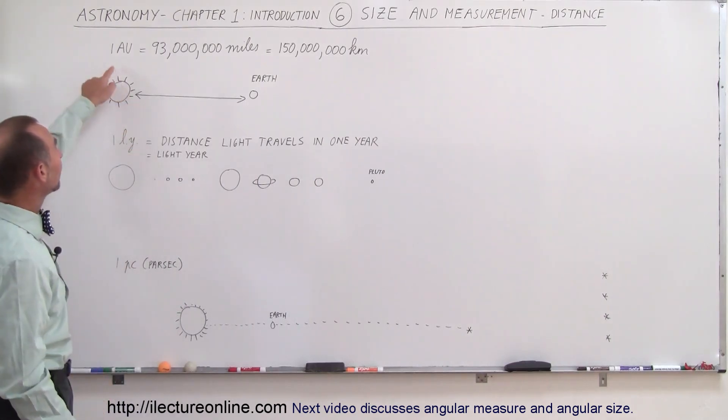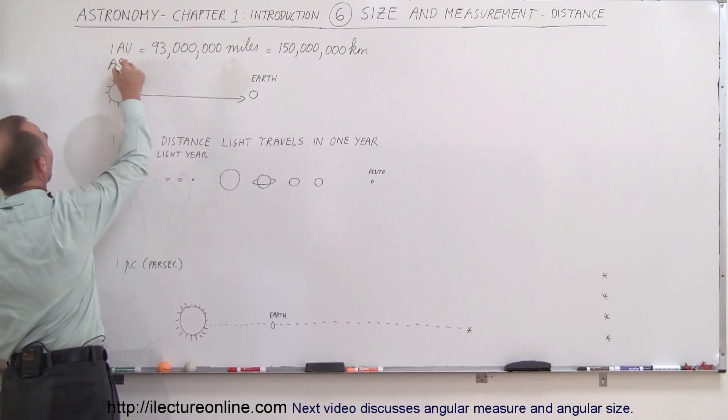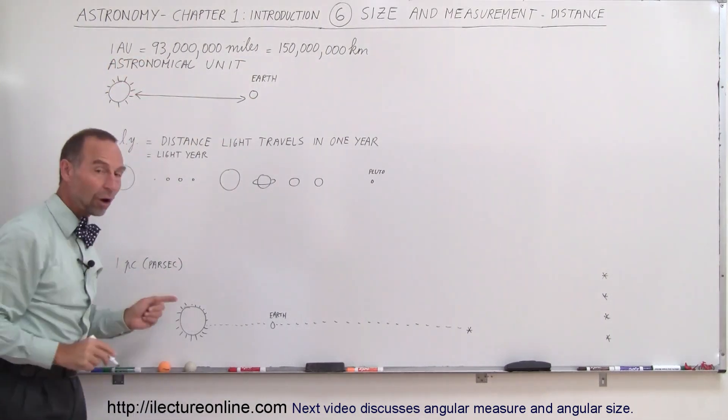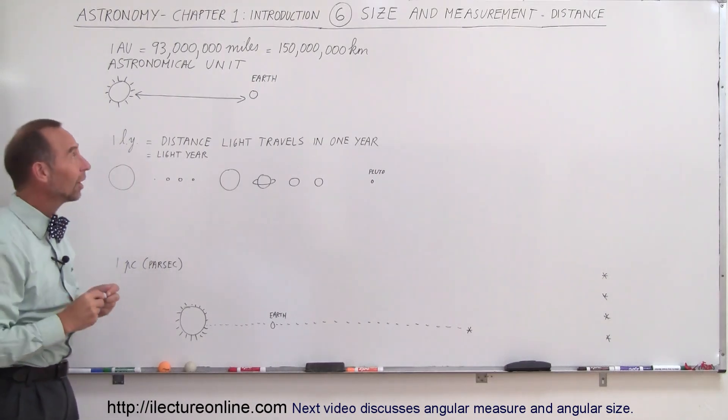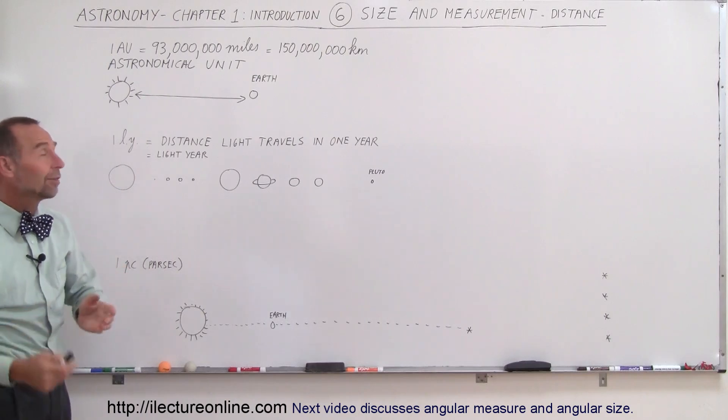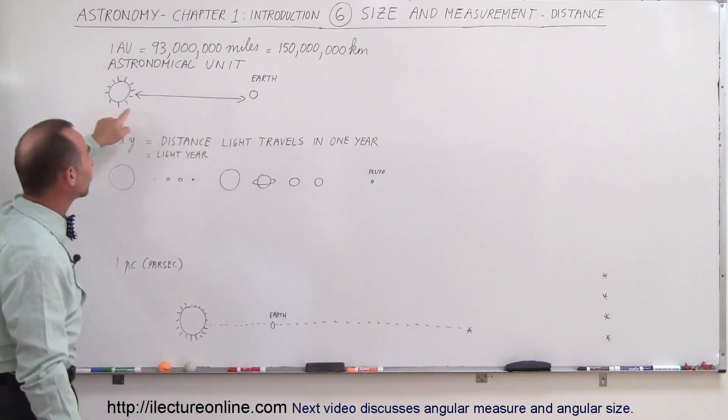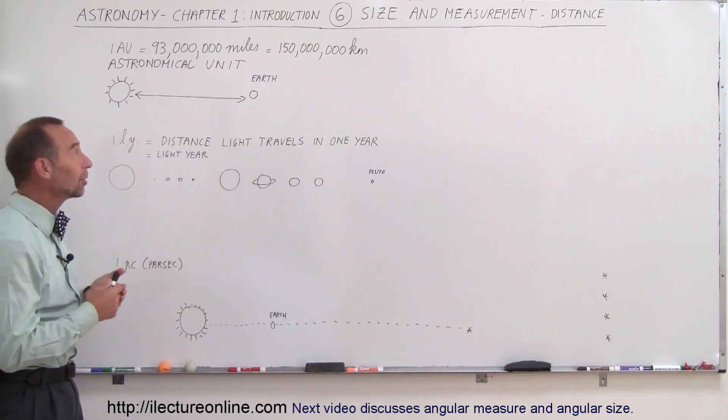One is called the AU or astronomical unit. I should probably write that down. The second one is called the light year and the third one is called the parsec. And so let's go and explore what these three measurement mechanisms are. So the first one is fairly straightforward. An astronomical unit is simply the distance between the Earth and the Sun. It's about 93 million miles or about 150 million kilometers.